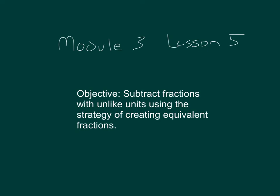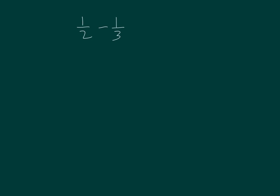The objective within this lesson is to subtract fractions with unlike units, using the strategy of creating equivalent fractions. 1 half minus 1 third. We'll need to change both units.